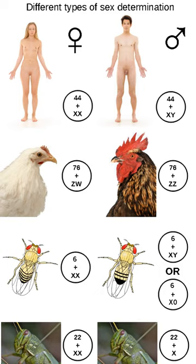In some bryophyte and some algae species, the gametophyte stage of the life cycle, rather than being hermaphrodite, occurs as separate male or female individuals that produce male and female gametes respectively. When meiosis occurs in the sporophyte generation of the life cycle, the sex chromosomes known as U and V are sorted into spores that carry either the U chromosome and give rise to female gametophytes, or the V chromosome and give rise to male gametophytes.